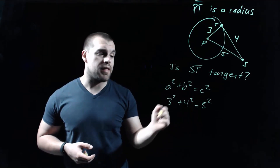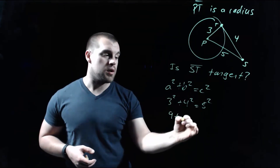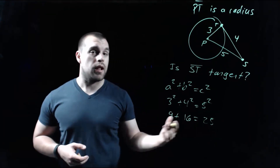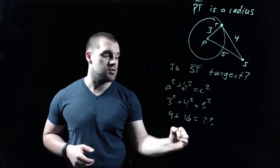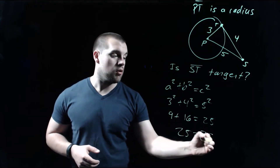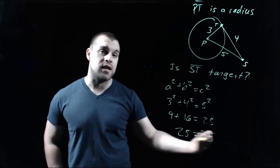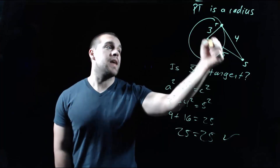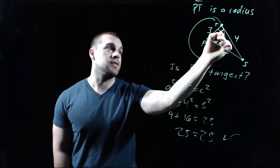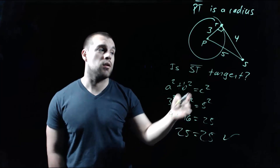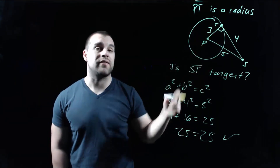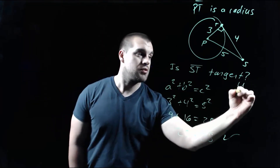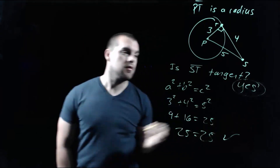Simplifying: 3² is 9, 4² is 16, and 5² is 25. Adding the left-hand side: 9 + 16 = 25. We got 25 on both sides — this matches up. That makes this triangle a right triangle, which means angle T is a right angle. So ST makes a right angle with the radius of our circle, and the answer is yes, ST is a tangent.